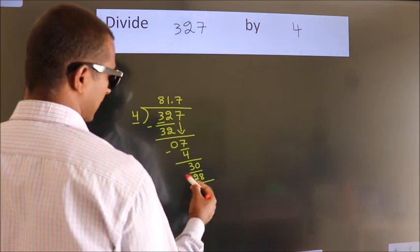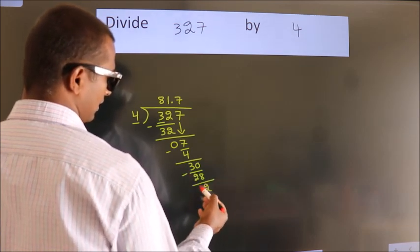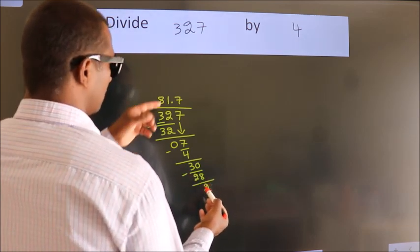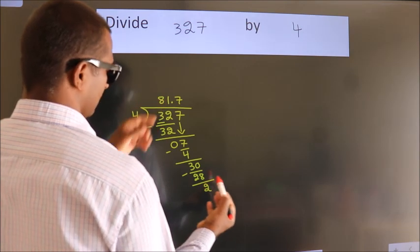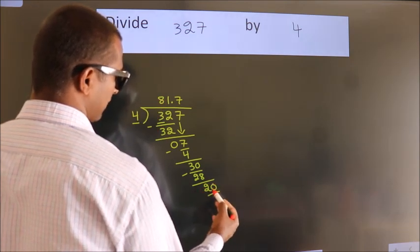Now we subtract. We get 2. After this, we already have the decimal, so directly take 0. So, 20.